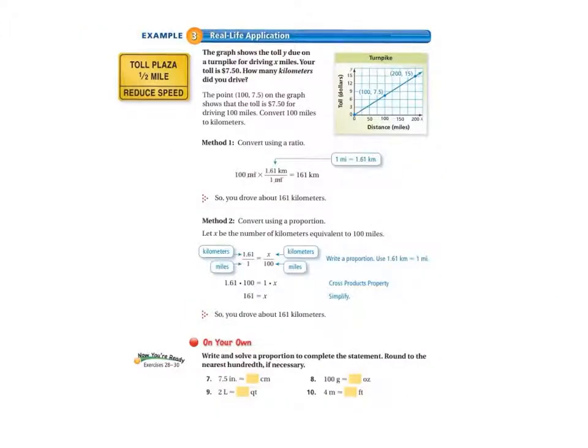We're moving on now to our real life application. The graph at the right shows the toll, which is letter Y, due on a turnpike for driving X miles. Your toll is $7.50, so that's how much you paid. How many kilometers did you drive? The point (100, 7.5) on the graph shows that the toll is $7.50 for driving 100 miles. So that's right here.